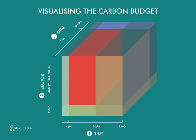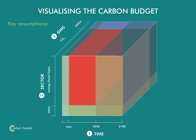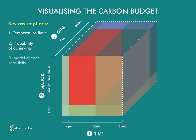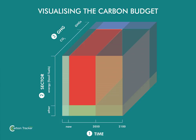It is important to note that the size of the overall cube cannot change once the key climate modelling assumptions are chosen — for example, the temperature limit that we are seeking to keep within, the probability of achieving that target, and the assumed climate sensitivity in the model. Everything can change within the cube, however. If a greater budget is given to non-CO2 greenhouse gases, this takes budget from and results in a much smaller budget for CO2 emissions, and vice versa.